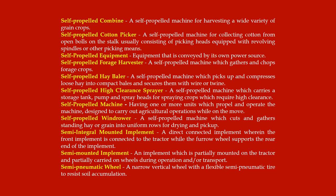Self-propelled machine: having one or more units which propel and operate the machine, designed to carry out agricultural operations while on the move. Self-propelled windrower: a self-propelled machine which cuts and gathers standing hay or grain into uniform rows for drying and pickup.